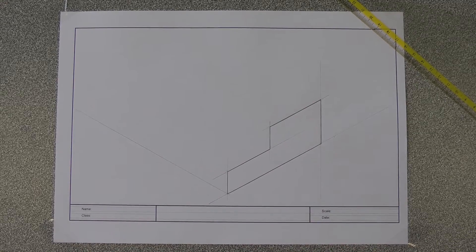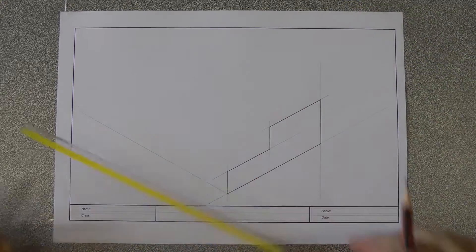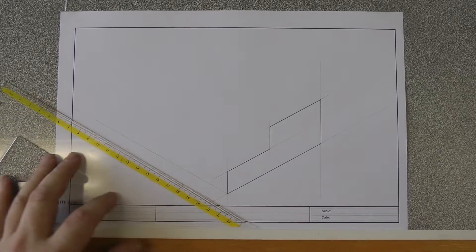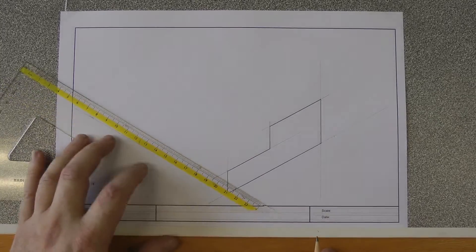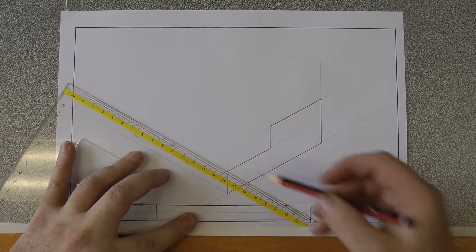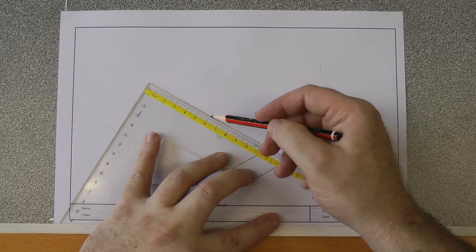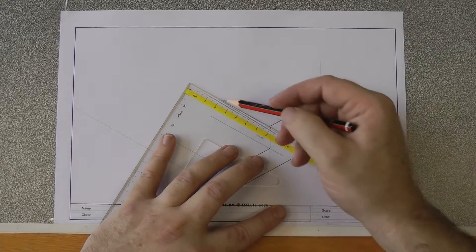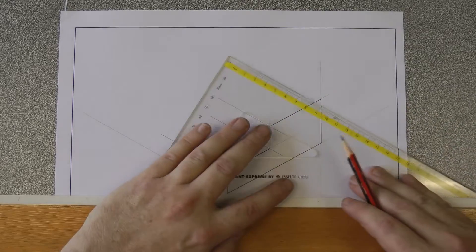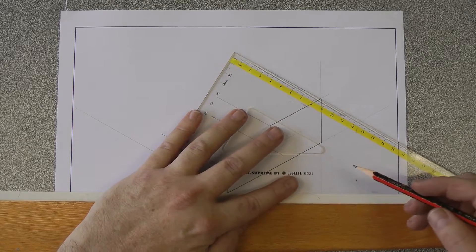So to do my top and my left surface, in all instances I need to do 30 degree angles, 30 degree lines out to the left. And they all go through these intersection points. So I do one through there, one through there, one through there, and another one through there.